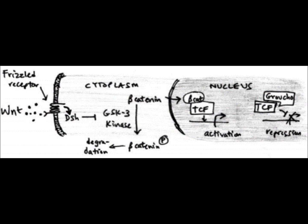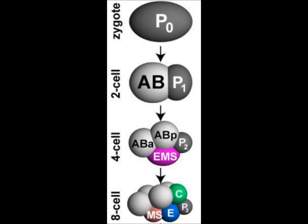Without beta-catenin in the nucleus, Groucho actually binds to TCF and that's a transcriptional repressor. Now that I have introduced what the general Wnt pathway looks like, we will see it in action in specific model organisms starting with C. elegans.